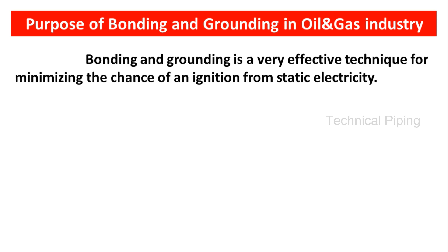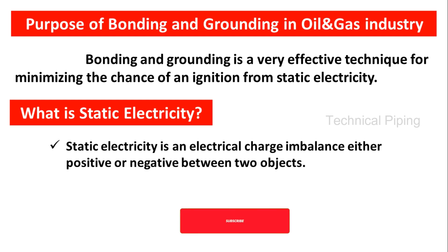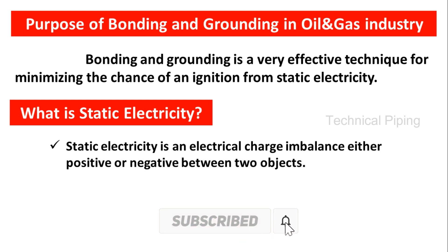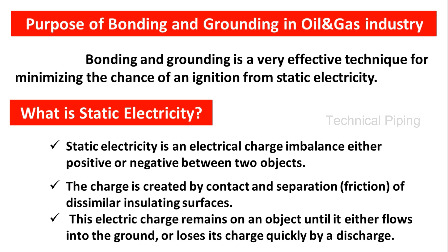Bonding and grounding is a very effective technique for minimizing the chance of an ignition from static electricity. Static electricity is an electrical charge imbalance — either positive or negative — between two objects. The charge is created by contact and separation of dissimilar insulating surfaces. This static electric charge remains on an object until it either flows into the ground or loses its charge quickly by a discharge.